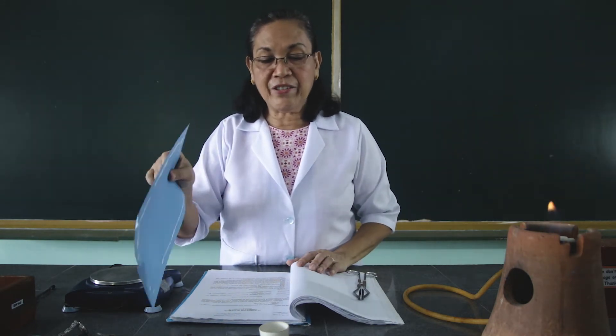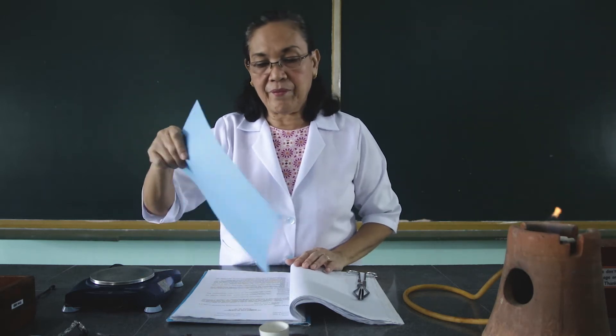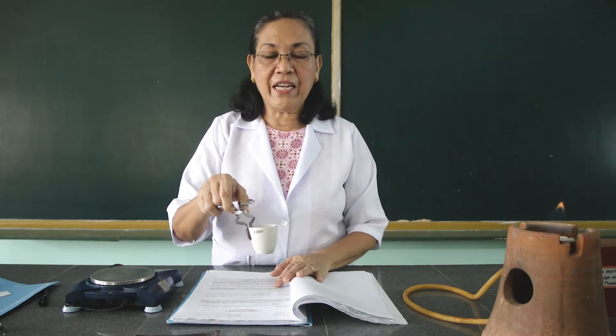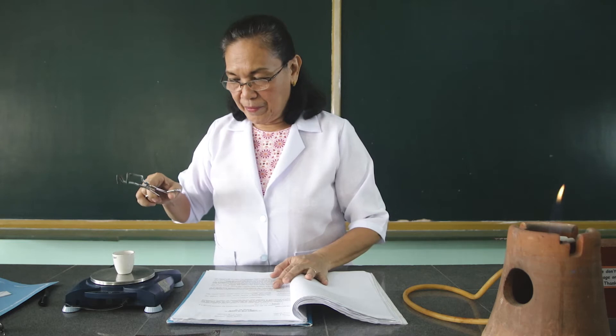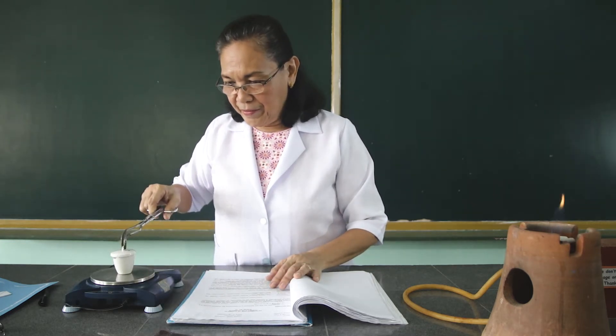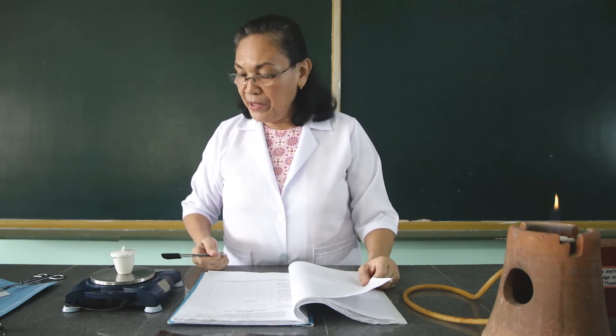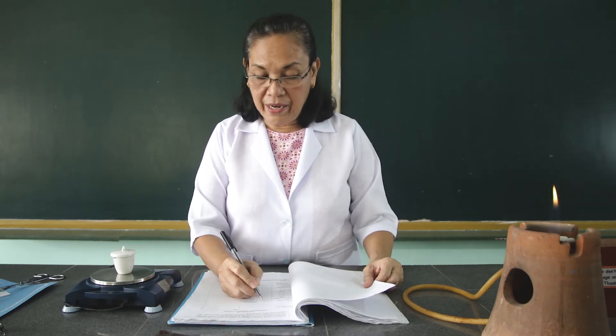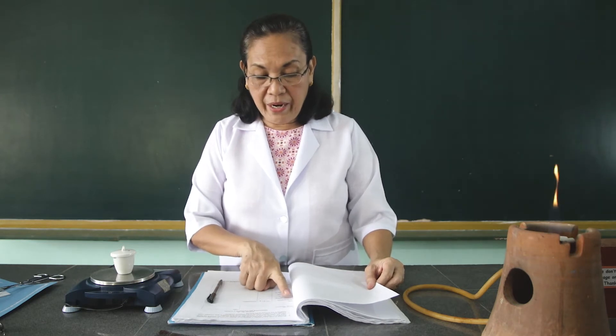We are going to remove this from the flame and cool it down. One way of cooling it is by fanning. We have already cooled down the crucible and we will get the mass of this empty crucible including the cover. Kindly record this — the mass of the crucible is 33.83 grams. Write this down in your data table in the space marked 'mass of empty crucible.'